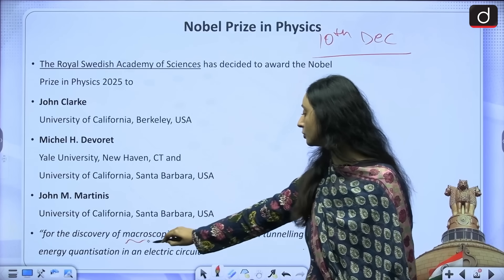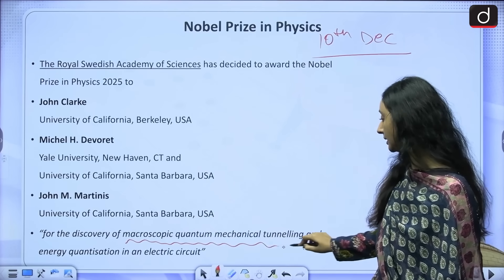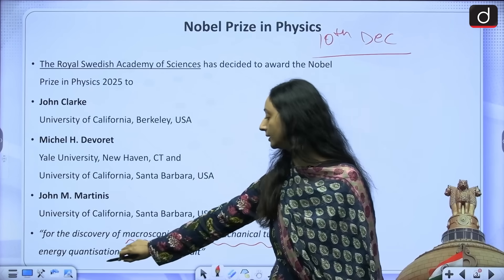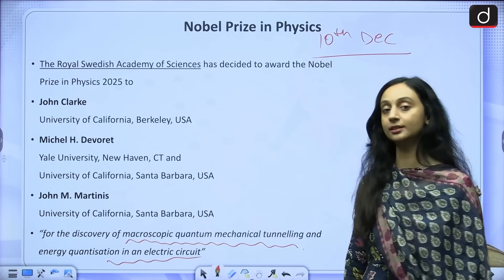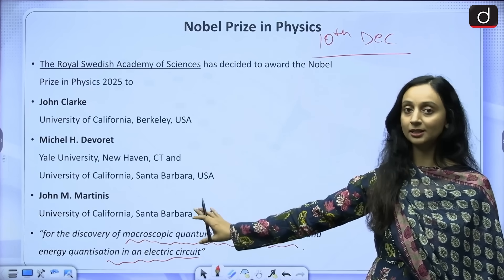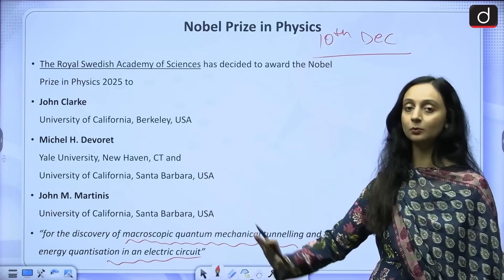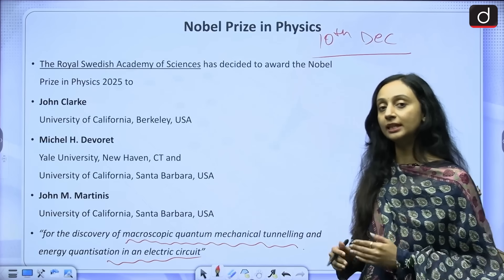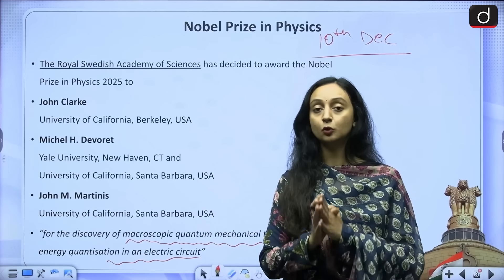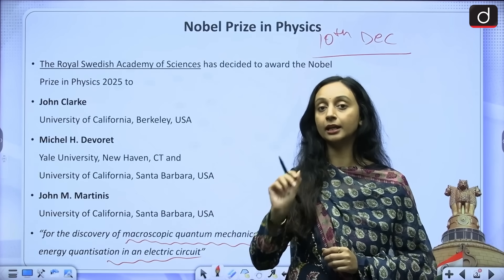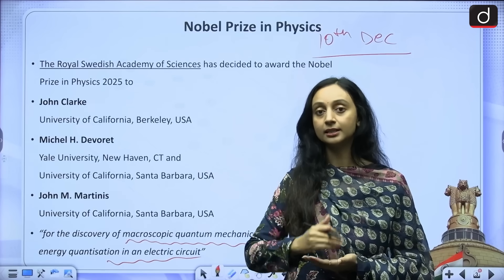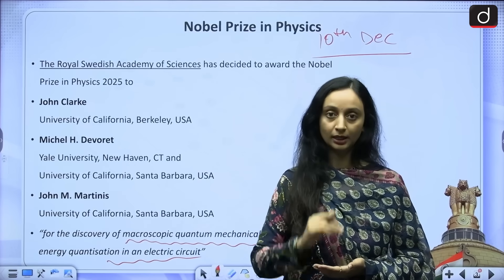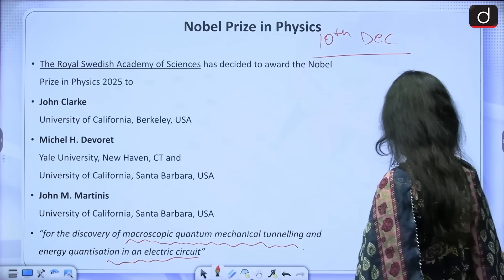These three scientists will be presented with this year's Nobel Prize in Physics and what was their discovery? The discovery of macroscopic quantum mechanical tunneling and energy quantization in an electric circuit. Now these might look like some heavy terms here but they are very easy to understand. We will talk about them in detail. So these scientists basically discovered that two phenomena of quantum mechanics which are tunneling and energy quantization, they exist even at a macroscopic level. So let's talk about the discovery here.